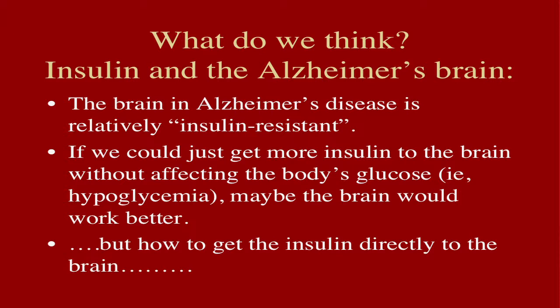If that's an important part of the disease, then if we could get more insulin to the brain — and get it directly to the brain without causing the person's blood sugar to bottom out systemically — maybe we could get the brain to work more effectively. But it's been a conundrum about how to get insulin to the brain without affecting the rest of the body. The solution that has been proposed and tested is to give the insulin intranasally.